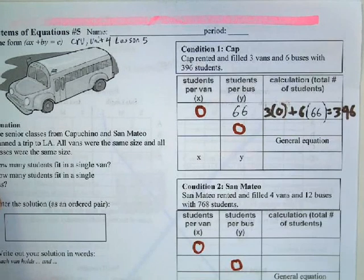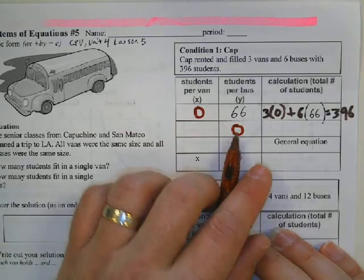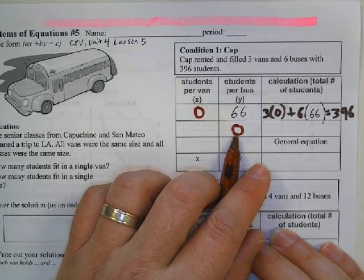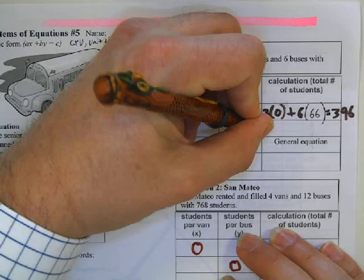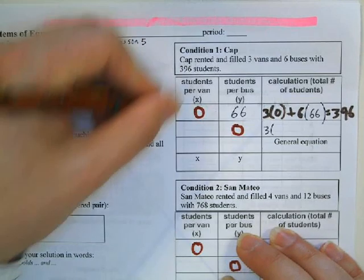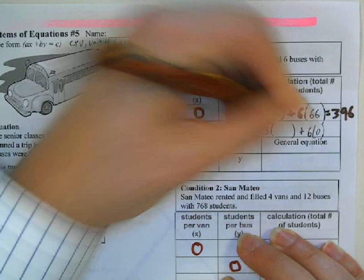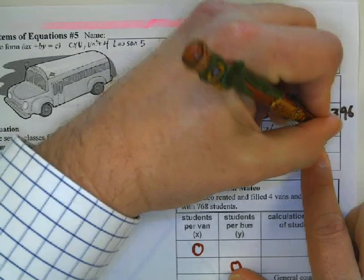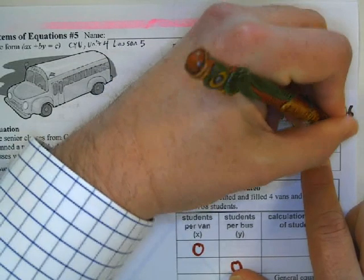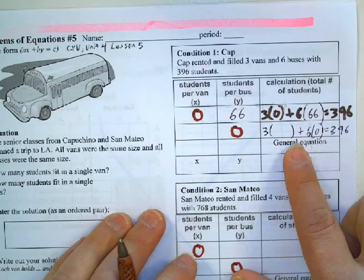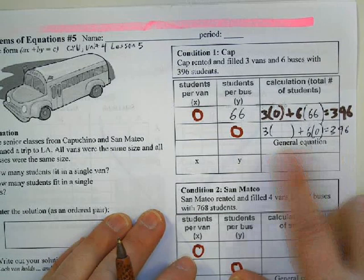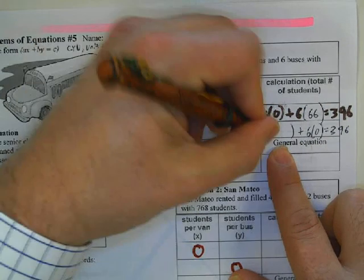The other thing is, what if I had zero students fitting on the bus? Well, we know we've got three vans. We're going to put nobody on the bus, and the total number of students we need to put onto the bus is 396.